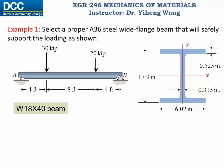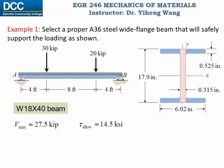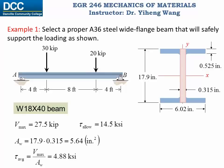We still need to double check that the shear stress requirement is also satisfied. We have the maximum internal shear force and the allowable shear stress for A36 steel. A simplified approach is sufficient since most of the shear force is resisted by the web, not the flange. We assume the total area of the web extending from bottom to top, calculate this area, find the average shear stress, and as you can see it is much smaller than the allowable shear stress. Therefore our selection is satisfactory, and that concludes this design procedure.